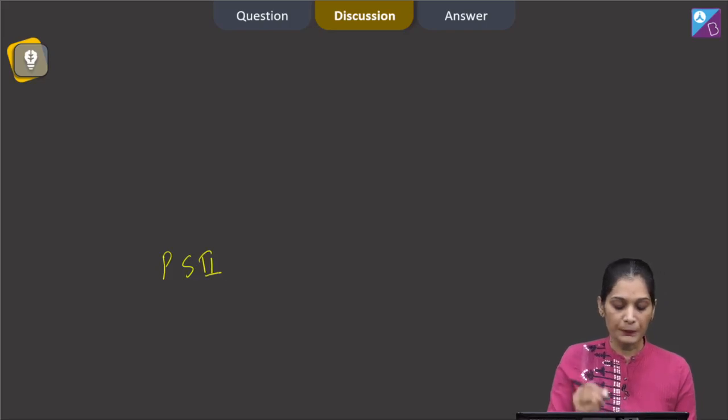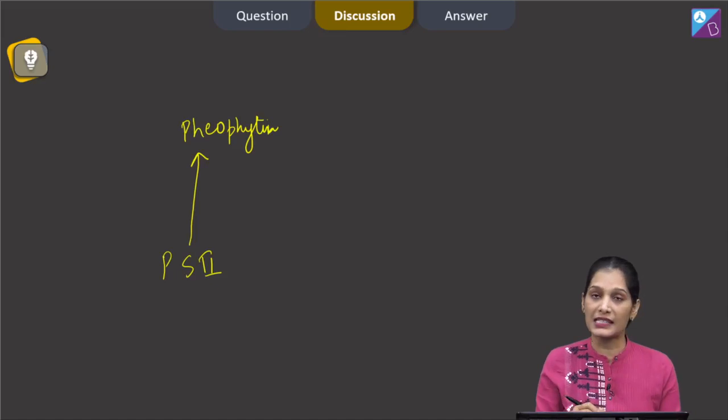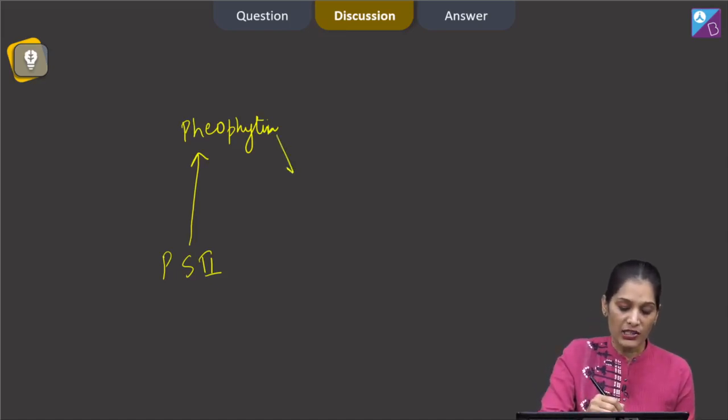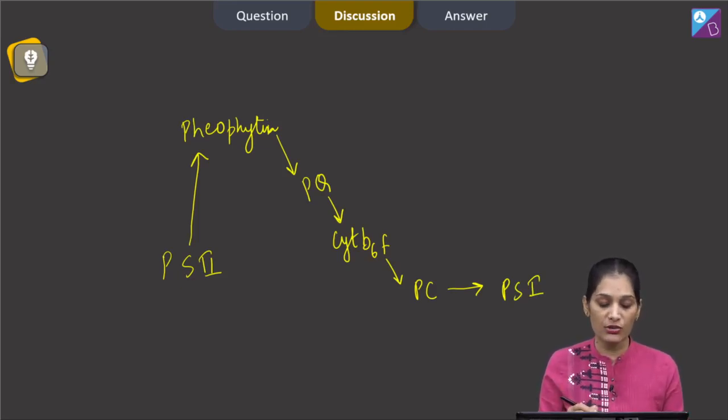you know about it that PS2 transfers the electrons to the pheophytin, which is the primary electron acceptor in the Z scheme. Then pheophytin transfers the electron to the plastoquinone, and this plastoquinone to the cytochrome B6F. Then the cytochrome B6F transfers the electrons to the plastocyanin and this plastocyanin to the PS1. So here we can see that the transfer of electron from PS2 to cytochrome B6F is done by the plastoquinone, whereas transfer of electrons from cytochrome B6F to PS1 is done by plastocyanin.